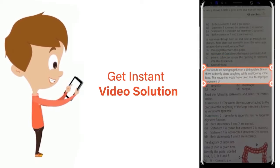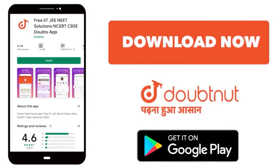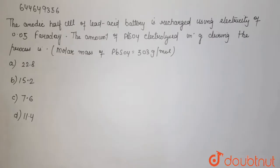Download Doubtnut app today. The cell of lead acid battery is recharged using electricity of 0.05 Faraday. The amount of PbSO4 electrolyzed in grams during the process... So we have to find the amount of PbSO4.